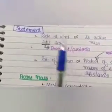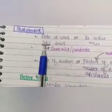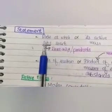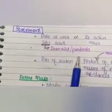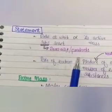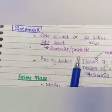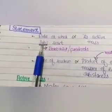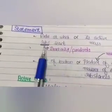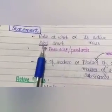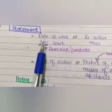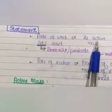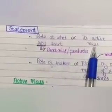The first part of the statement: the rate at which substances react — substances meaning reactants and products in any chemical reaction — is directly proportional to their active masses.